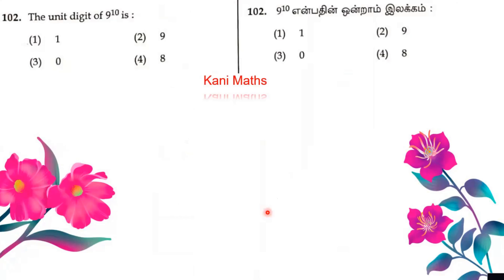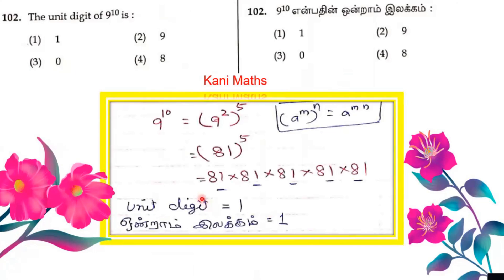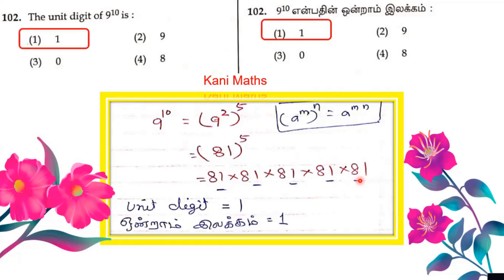That's why we use the shortcut method. For 9 power 10, we use A power M whole power N equals A power MN. So 9 power 10 equals (9 squared) power 5, which is 81 power 5. We use unit digits — 1 ROM to multiply. That's why the option is 1.